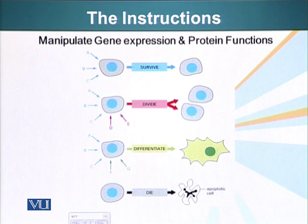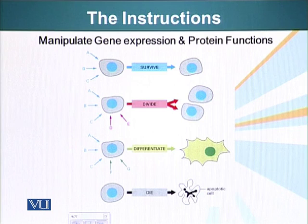Signals also tell cells to differentiate. We all start with a single cell, and that single cell divides and divides — some of those cells differentiate into one type of tissue, others differentiate into a different type of tissue.